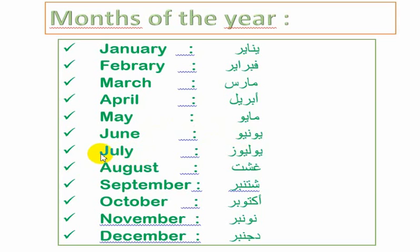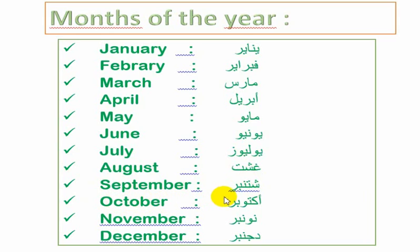July. July. August. August. September. September. October. October. November. November. November. December. December. December.